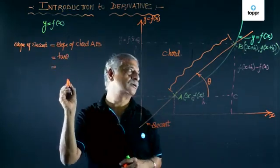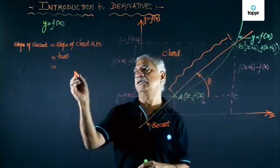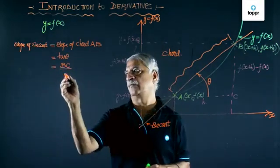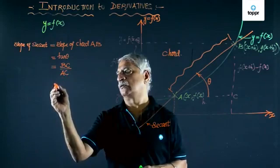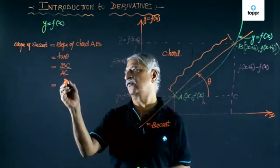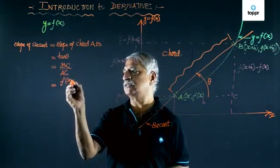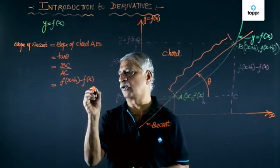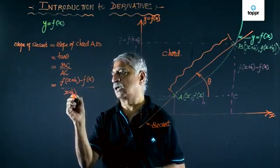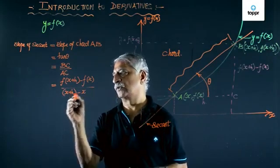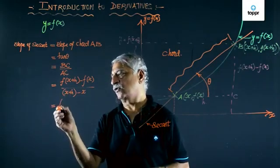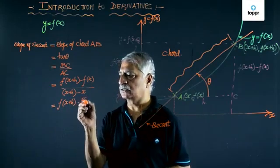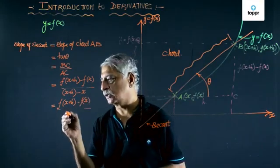Which is nothing but BC upon AC. This is f of x plus h minus f of x upon x plus h minus x, which is f of x plus h minus f of x upon h.